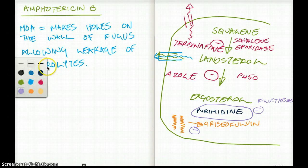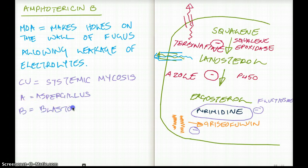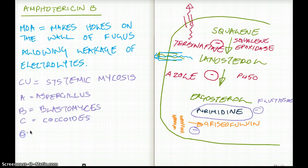When do we really use amphotericin B? Amphotericin B is commonly used for systemic mycosis. And what are some of the common systemic mycosis that it's used in? They are A for aspergillus, B for blastomyces, C for coccidioides. The other C for candida. And there is another C which I added that it cannot, cannot cross blood-brain barrier.